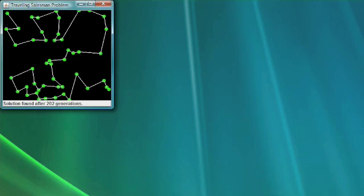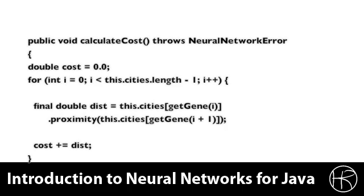We will now look at the source code necessary to implement this. Here you see the calculate cost method, which is necessary for any implementation of the genetic algorithm. This calculates the cost of a chromosome. For the cities, the chromosome is the list of cities in order that the traveling salesman will visit them. We simply move through the cities and calculate the proximity between each city and the next, adding up the distances using a simple XY distance formula. We calculate the total cost of the chromosome — the total distance — which is used to sort chromosomes and pick those that will produce the next generation.